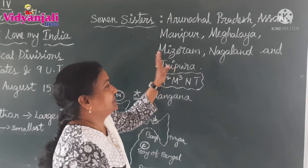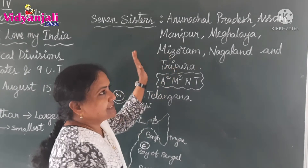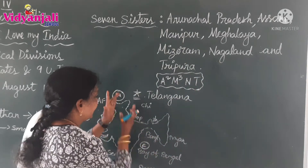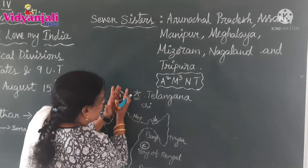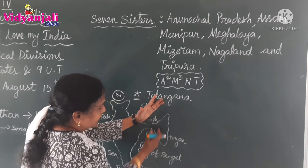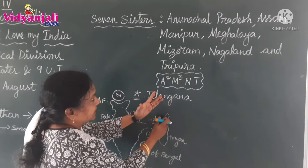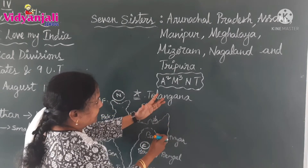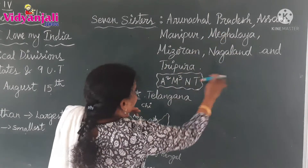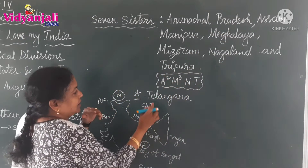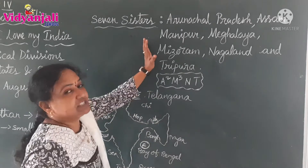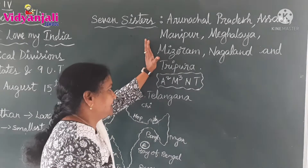Coming to the next point — about the seven sisters. Seven sisters means these seven states are located in the north-eastern part of our country. These seven states are called seven sisters.